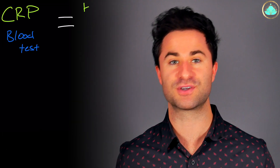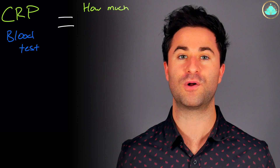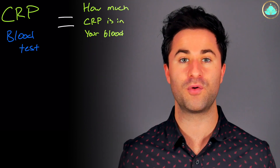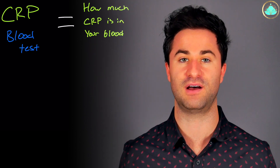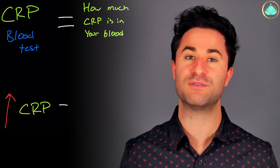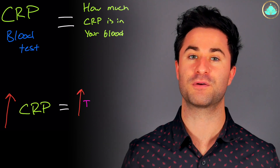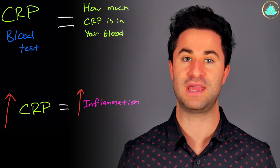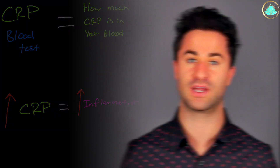The CRP blood test measures your overall levels of this specific protein floating around in your blood. More of this protein floating around in your blood basically means more inflammation is occurring.